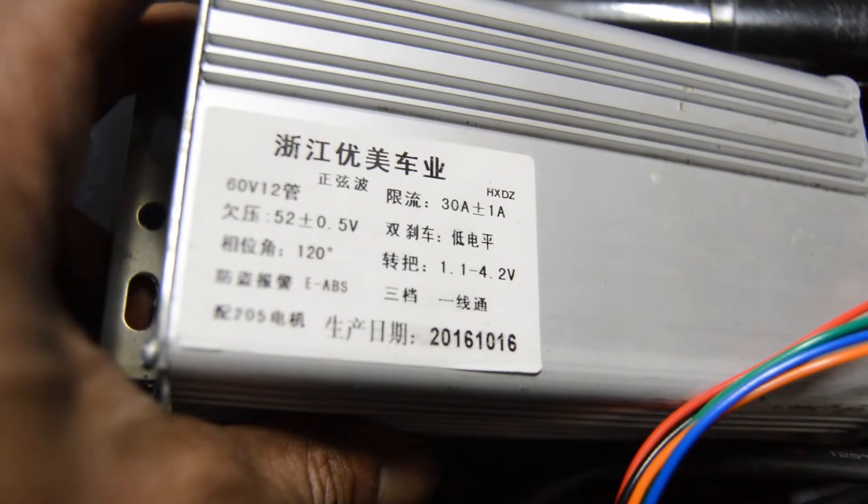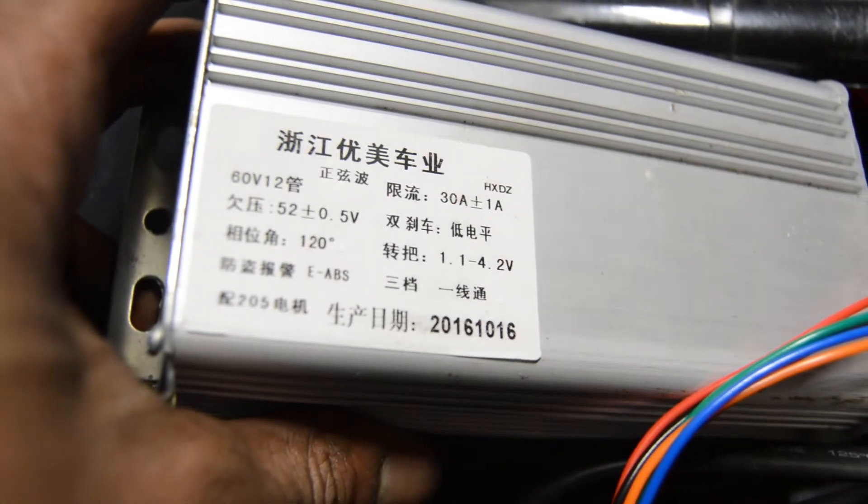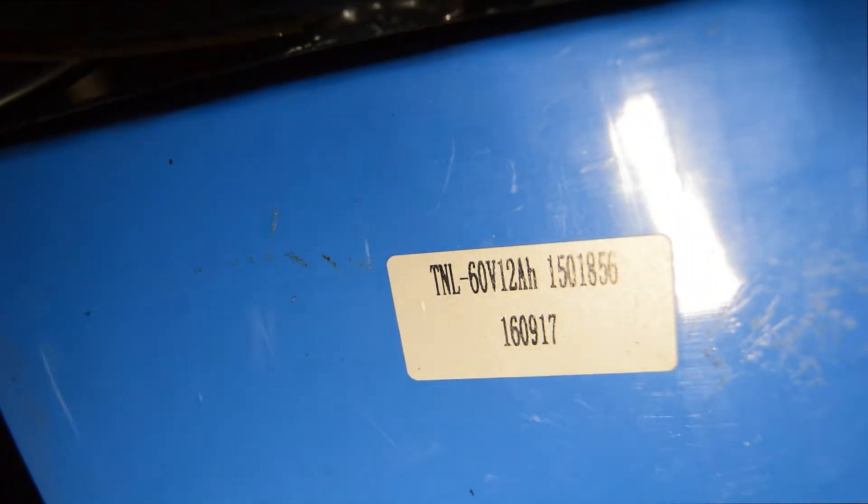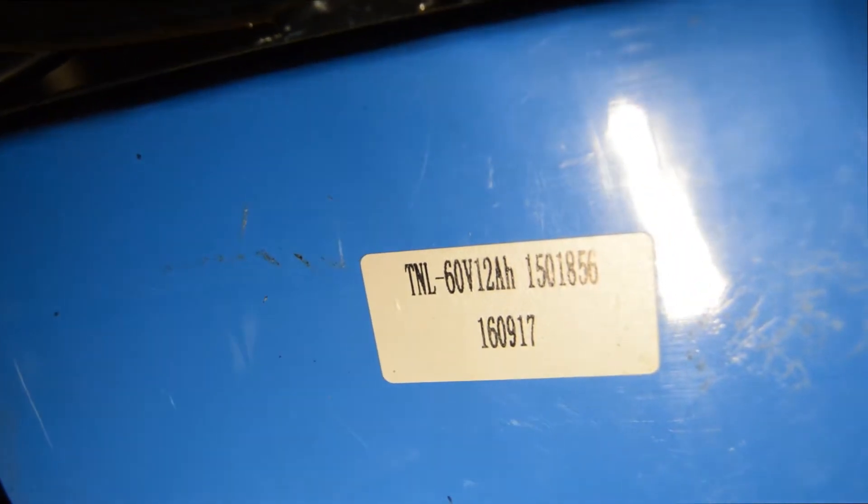So here we've got a 52V 30A controller, pretty basic, probably parked that out, with a 60V 12AH pack as promised.